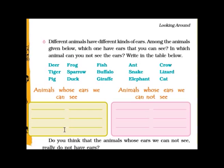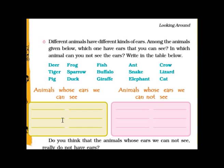Pig — you can see pig's ears, so write it in this column. Duck — duck's ears again you cannot see. Giraffe — you will write it here. Elephant — you can see the ears. And even cat. So all these will come in the visible ears column.